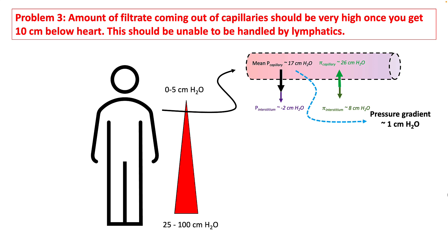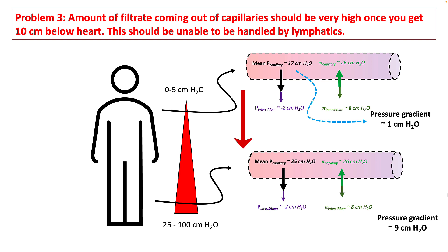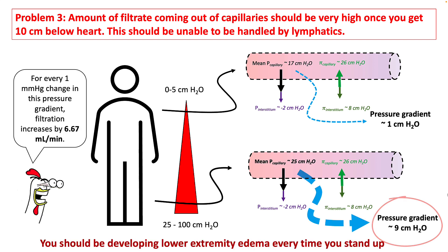The third problem is that the amount of filtrate coming out of capillaries should be very high once you go below 10 cm below the heart. Think about the capillary at heart level — the pressure gradient is around 1 cm of water. As you move toward the legs in the standing position, mean capillary pressures are high because venular pressures are high, which would result in a very high filtration rate. You should be developing lower extremity edema every time you stand up.